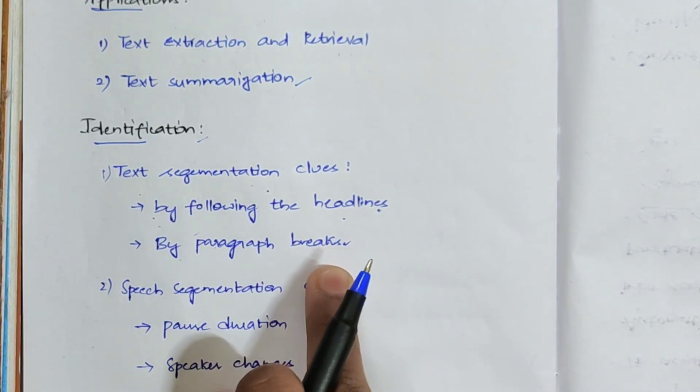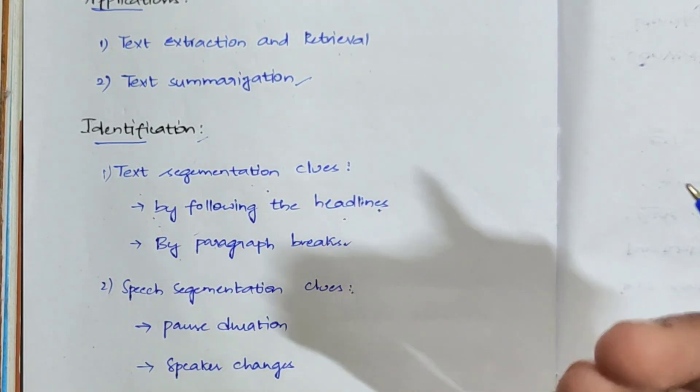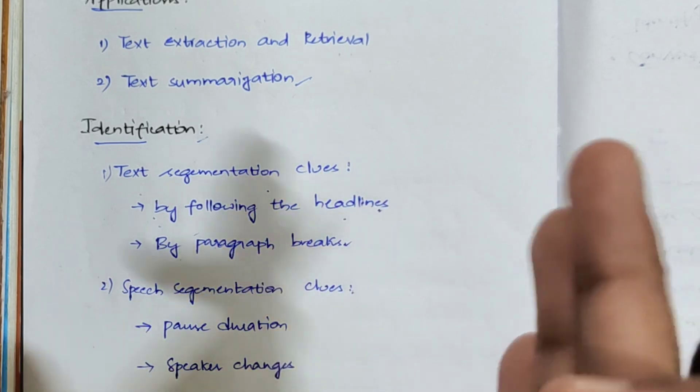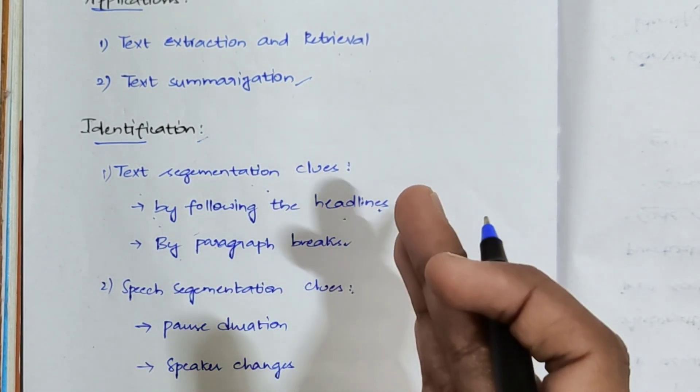The second thing is by paragraph break. The system can actually detect the topic boundary whenever there is a break in between two paragraphs - it will detect that this is one particular topic and this is another topic.